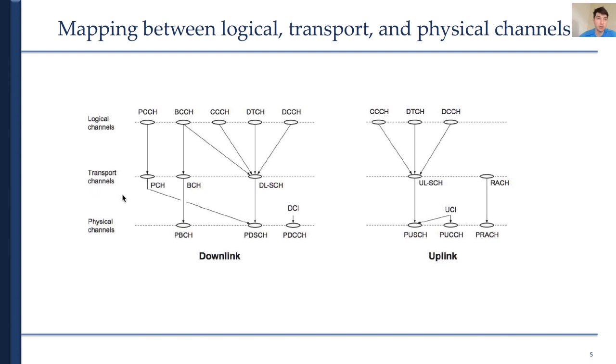Next, let us move to the transport channels. The first one we'll talk about is BCH, the one that we'll see later today, which is used in the initial access. BCH has a fixed transport format and provides for transmission of parts of the BCCH, and more specifically it is called Master Information Block, which we'll talk about later in this presentation.